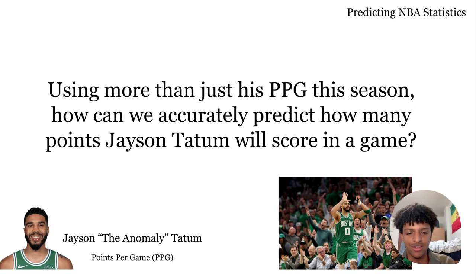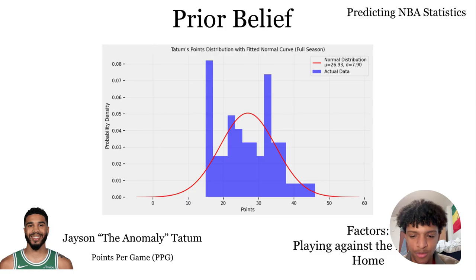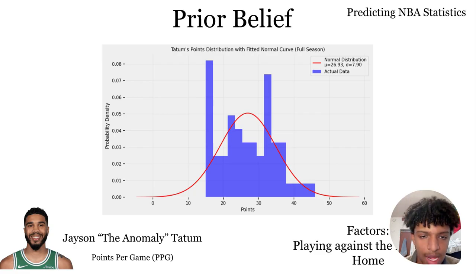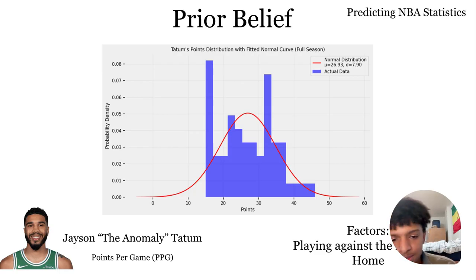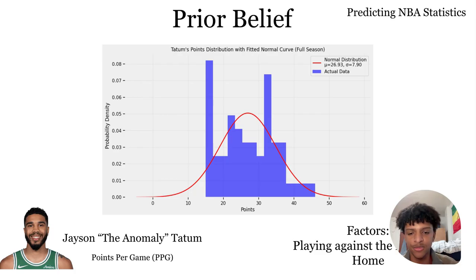To do that, I'm going to use Bayesian inference, which the formula up here is. Basically, I created a prior belief using his season stats — his season points per game. I used the NBA stats API to get the list of all his games this season, got the points for each game, and then calculated the mean as his average and the standard deviation, which I used to create a normal distribution. You can see it here — that's the prior.